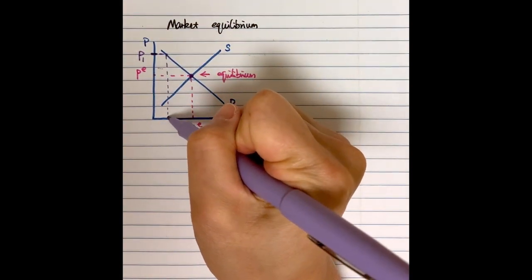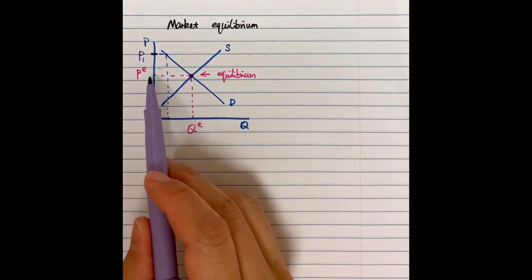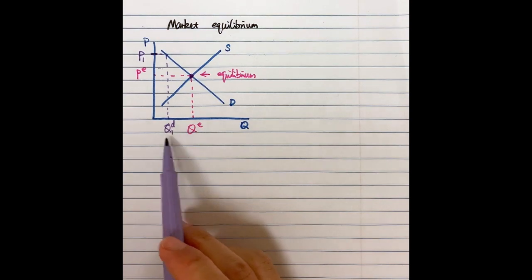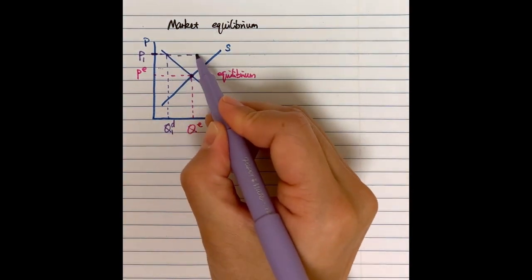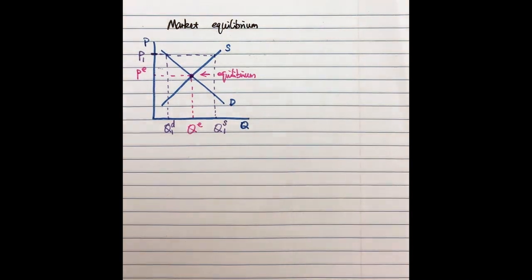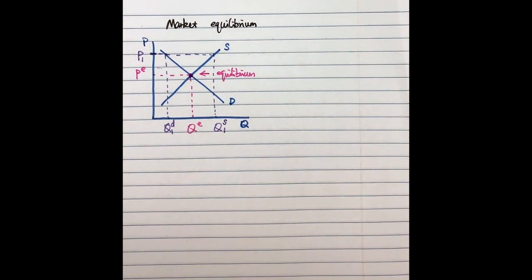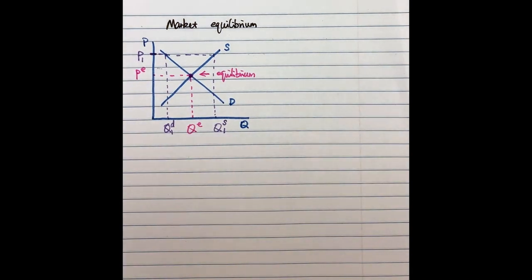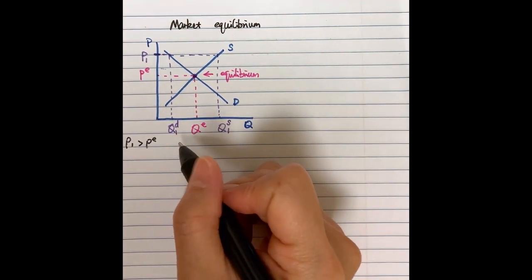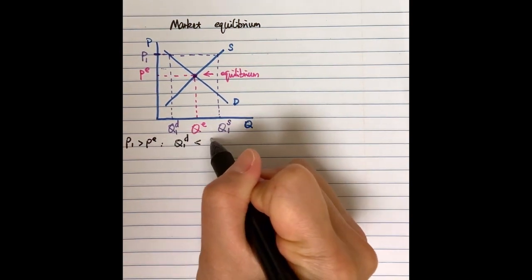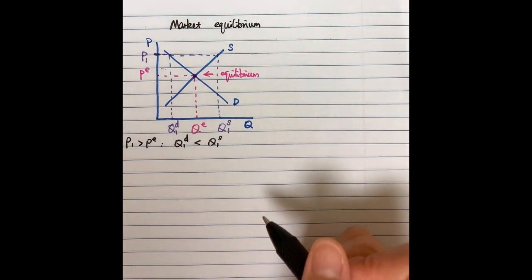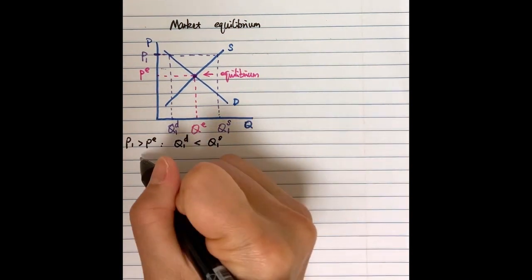At P1, we can find the corresponding quantity demanded. Since the price is higher, consumers would like to buy only Q1^D products. However, from the seller's perspective, the higher price means they would like to offer more products, so the quantity supplied is Q1^S. At this price, P1 is larger than the equilibrium price, and quantity demanded is smaller than quantity supplied.